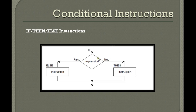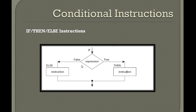This is the flowchart for the if statement. It will check for the expression — if the expression is true, then it will go to the 'then' branch, execute those instructions, and end the if statement. If it is false, it will go to the else part, execute that set of instructions, and then exit the if block. That's how if statements work in any programming language.